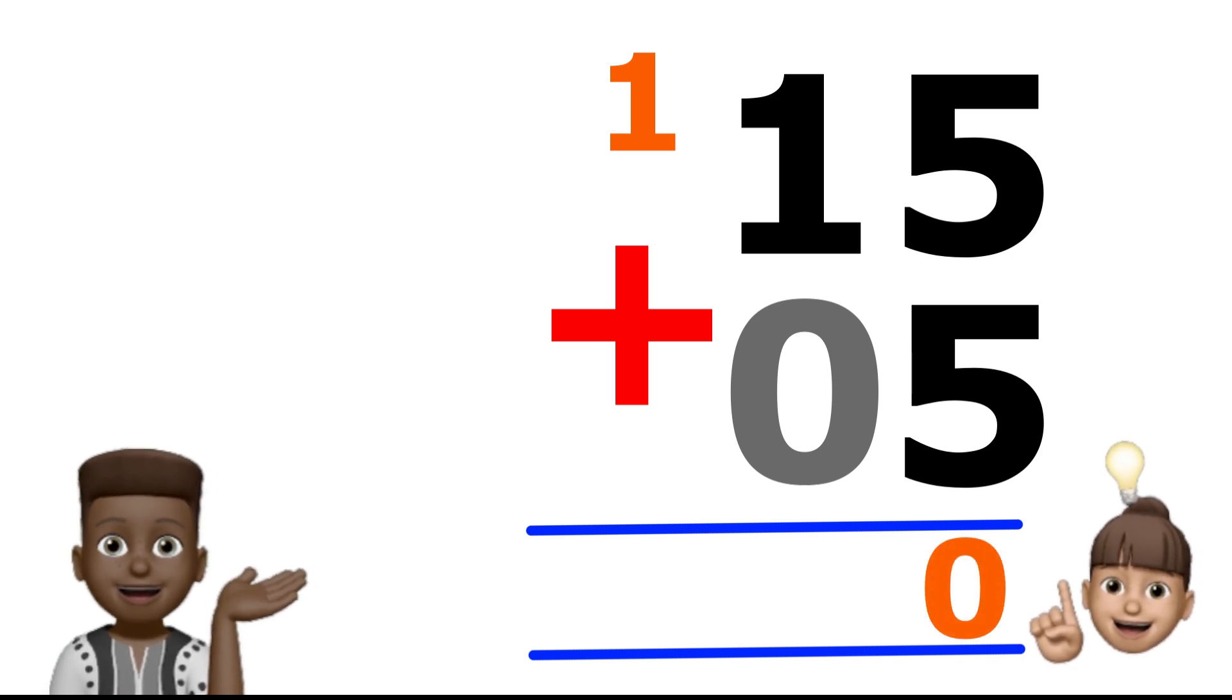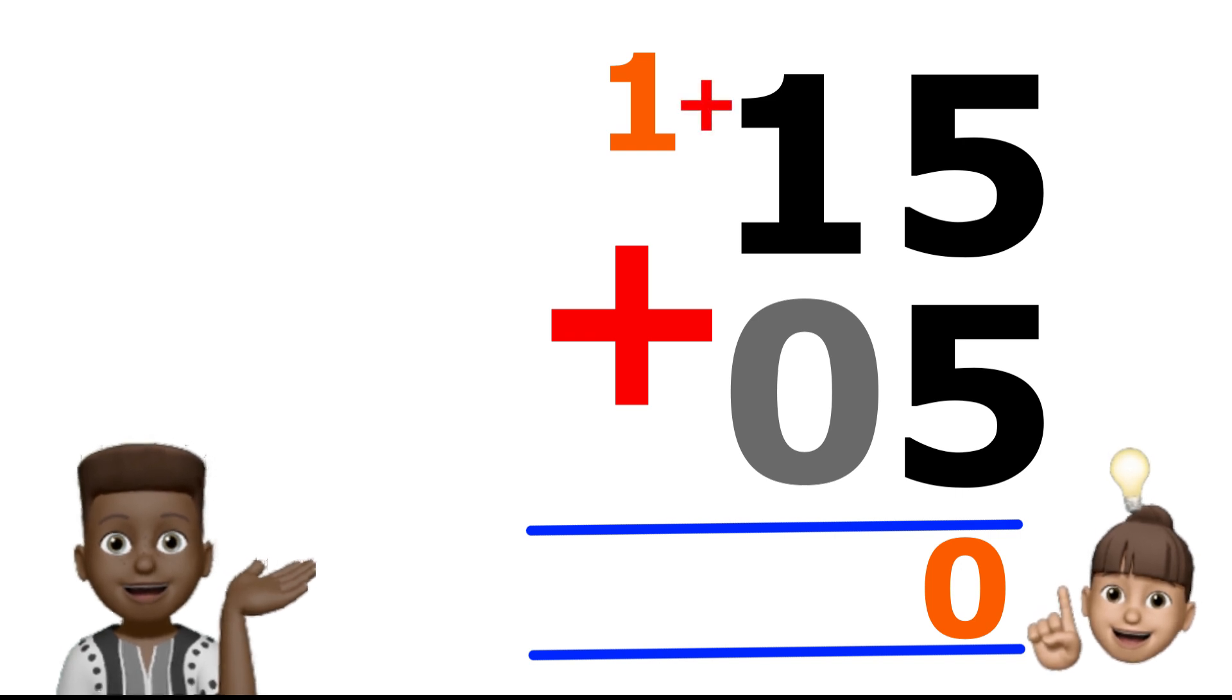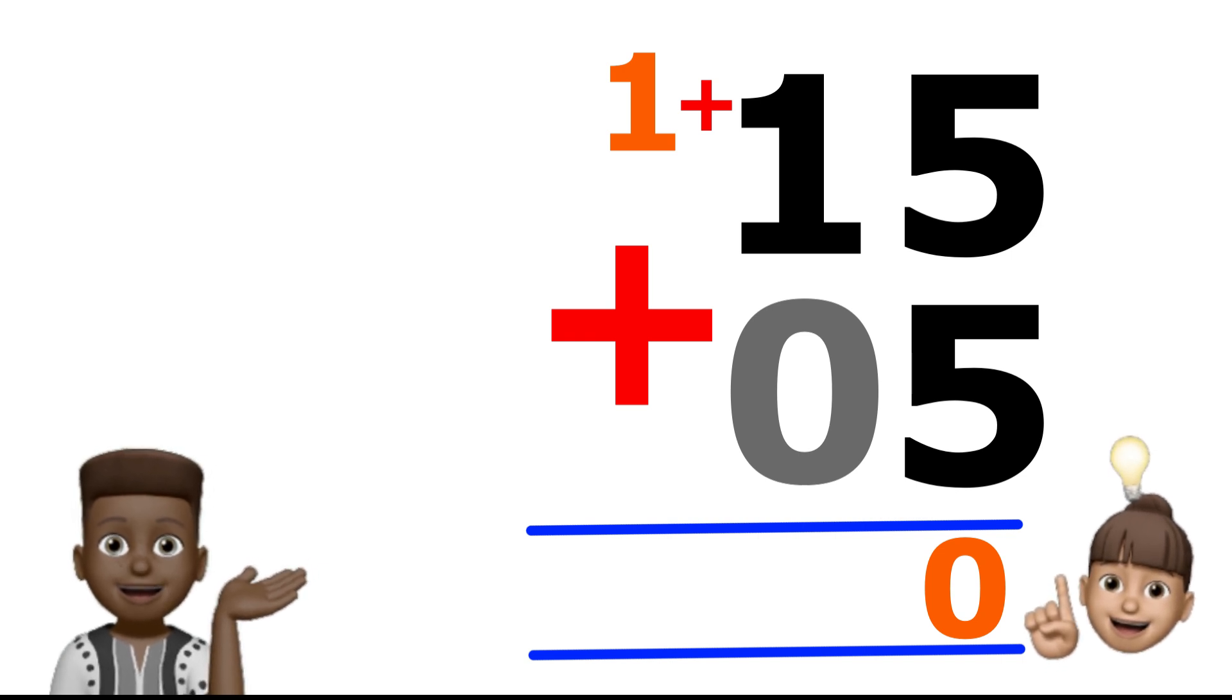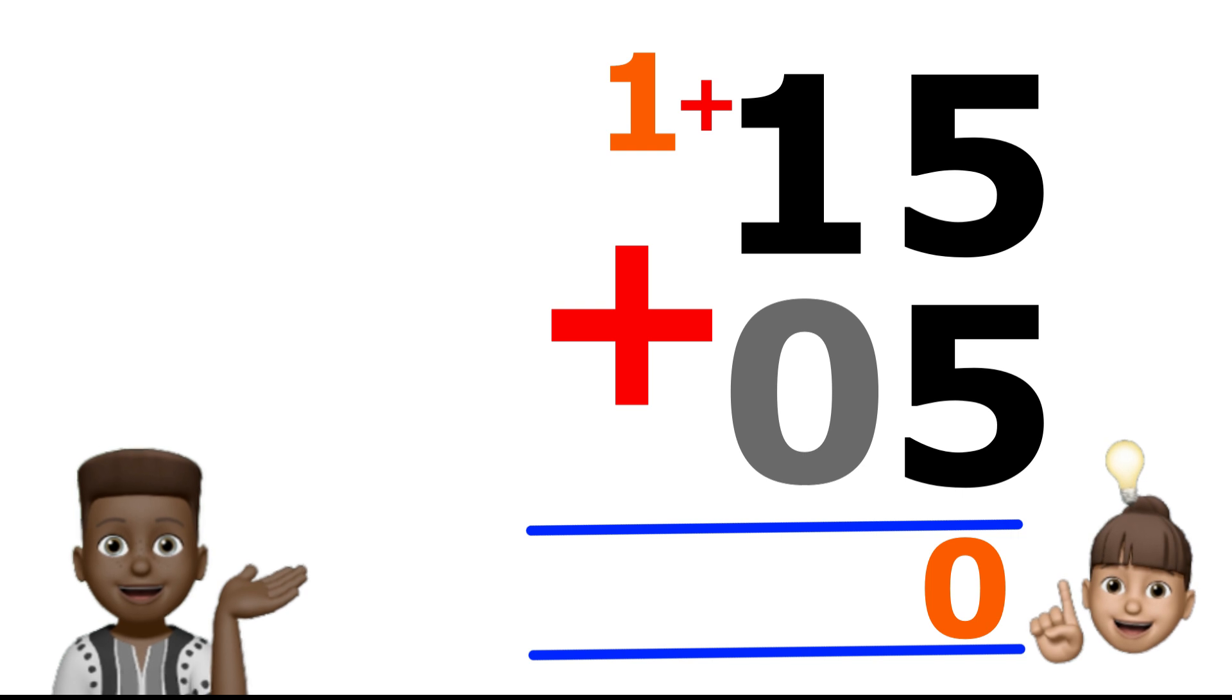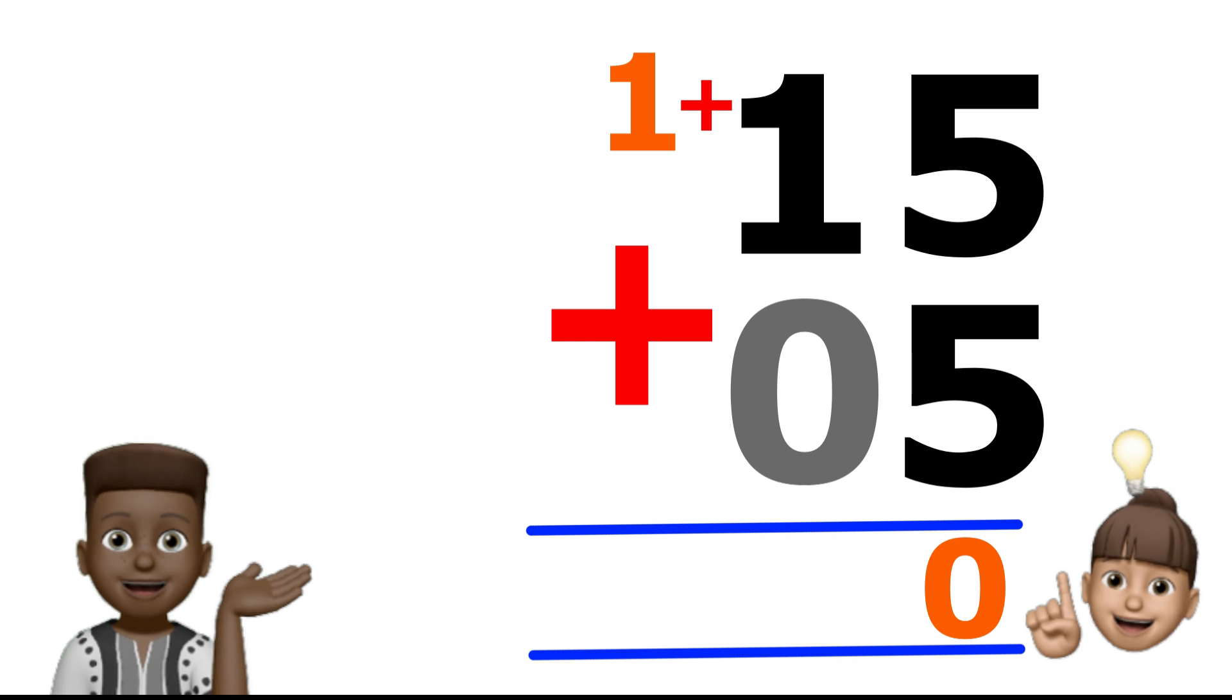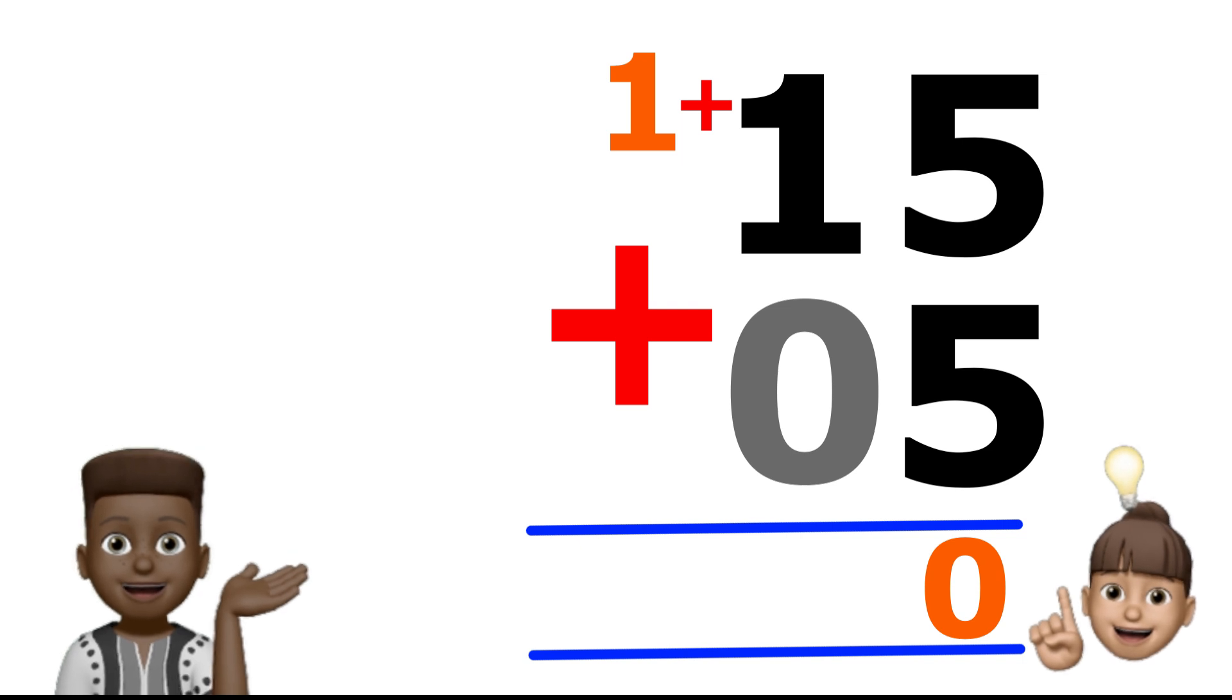Now, for the last step! We have one plus the invisible zero, plus that one that was carried over! So, one plus zero is one, we all know that! Now, we have to do one plus the one that was carried over! That's two! So, we write two, under the one, and invisible zero!